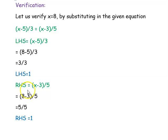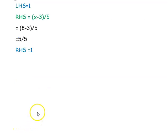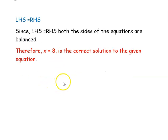The right hand side is x minus 3 divided by 5. Substituting 8 gives 8 minus 3 divided by 5, which is 5 divided by 5, so the right hand side also equals 1. Left hand side equals right hand side, confirming that the equation is balanced and x equal to 8 is the correct solution.